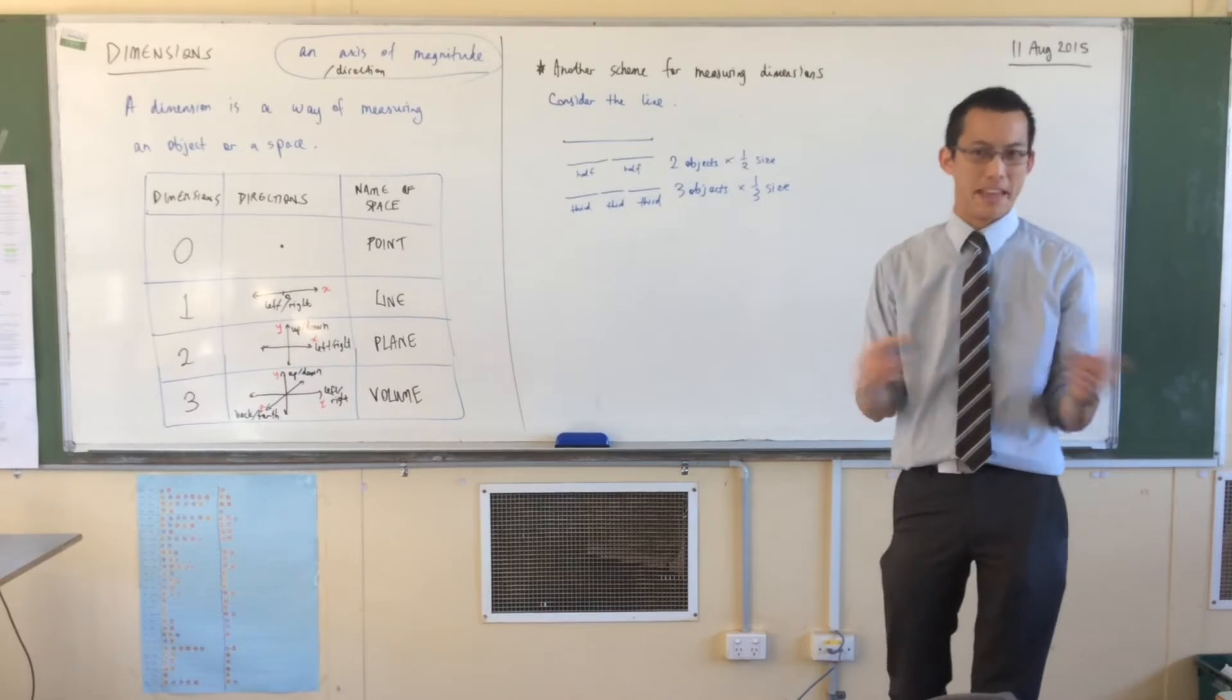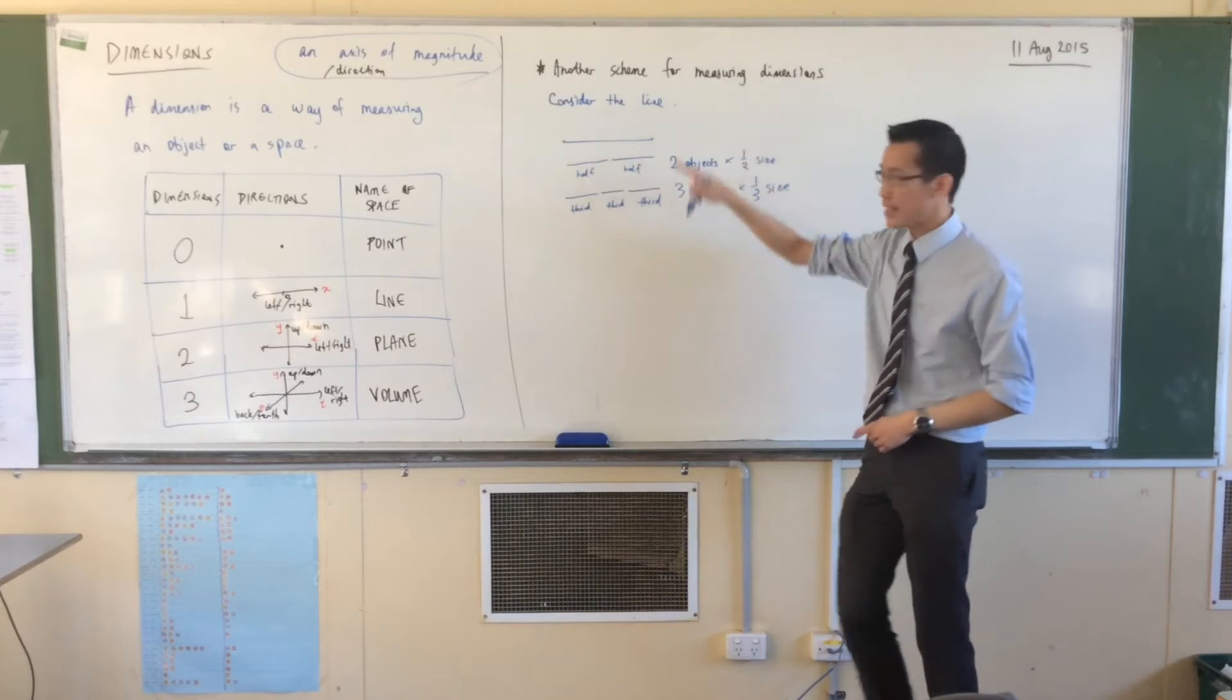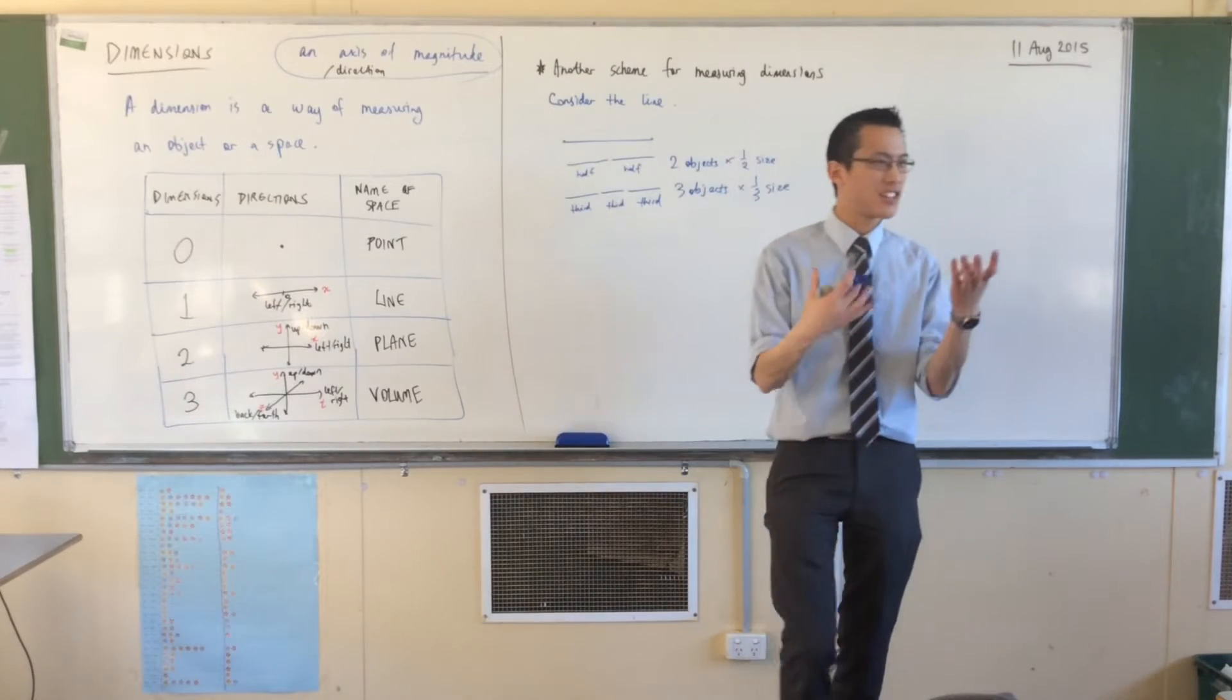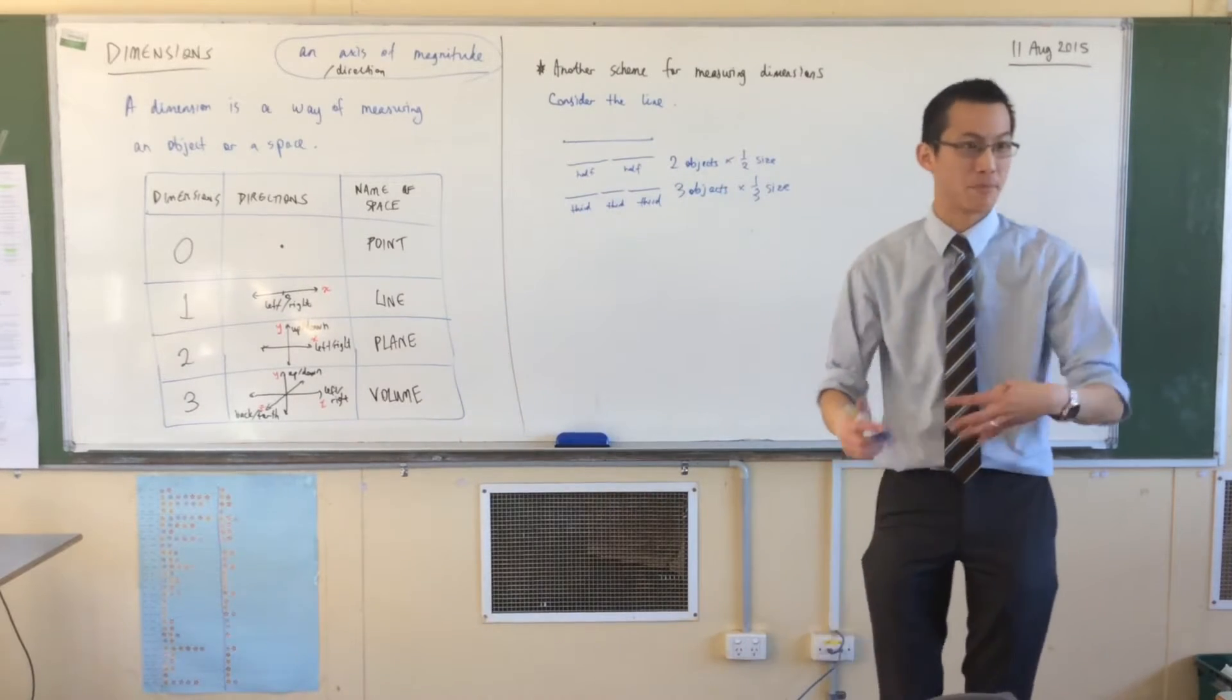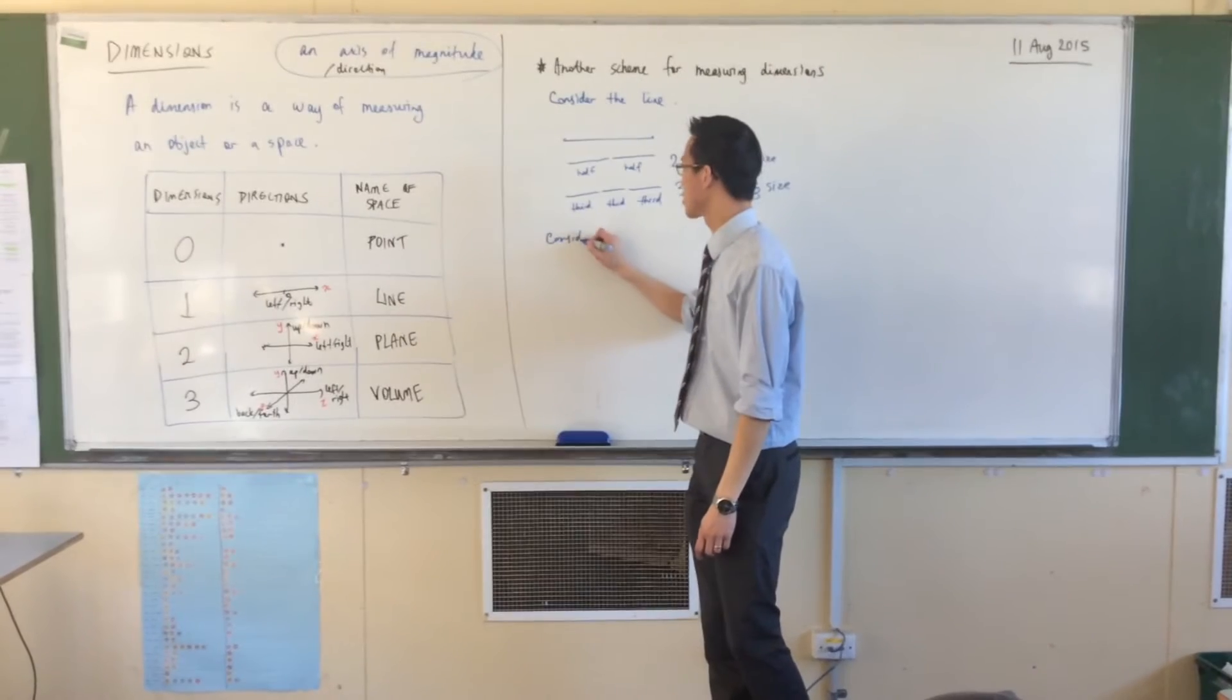Well, what's the big deal? Let's move up. This is the line. Let's consider a two-dimensional object. How about a square? That's a pretty quintessential two-dimensional object, right? So consider a square.